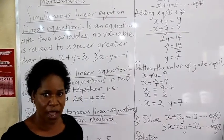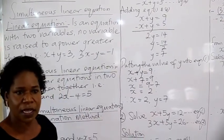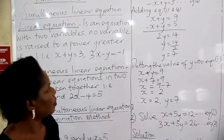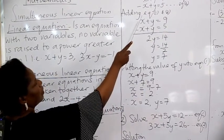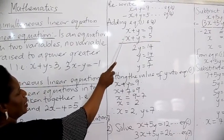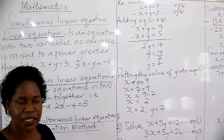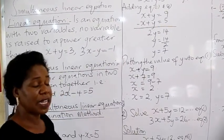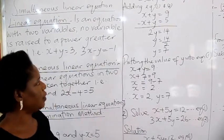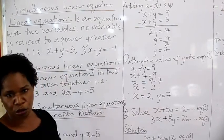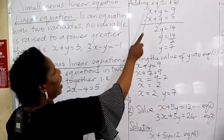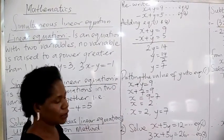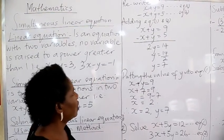Let us eliminate x. Elimination means you want to stop the operation of x in your equation. Looking at variable x: here we have positive, and here we have negative. When you have two different signs — whether negative and positive or positive and negative — you are going to add your two equations together. If you add x in equation 1 and x in equation 2 together, you are going to get 0. So you have terminated x.